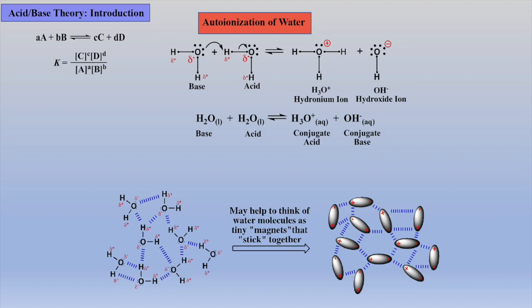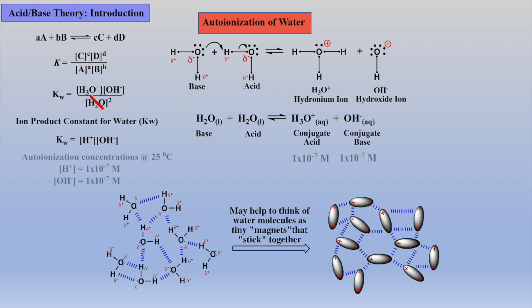This equilibrium can be expressed via the law of mass action, or commonly called the law of equilibrium, which is shown here in its generic form. But remember, pure liquids and solids are not included in these equilibriums, thus we can cancel water from the equilibrium expression, and we can simplify the hydronium ion as simply a proton. The final equilibrium is called the ion product constant for water, or Kw, and it is the product of the concentrations of protons and hydroxide ions, which are both 1 times 10 to the minus 7 for pure water at 25 degrees Celsius.